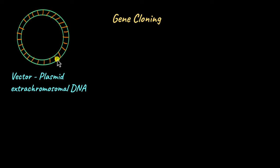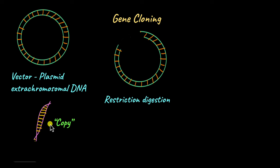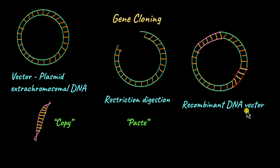We're going to take this vector — which is a plasmid here — and treat it with the same restriction enzymes we used to isolate our desired gene. Now we have a gap in the plasmid DNA, and we're going to paste the desired gene into that gap. When we insert the gene into the vector with the help of DNA ligase, we get a recombinant DNA vector, where the foreign gene has been integrated into the plasmid.